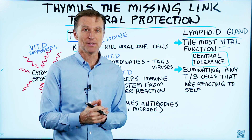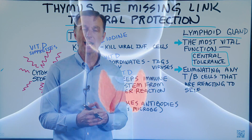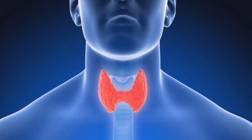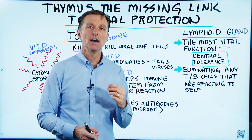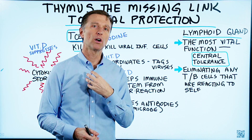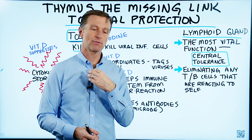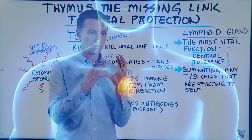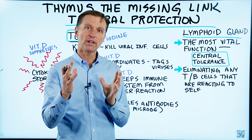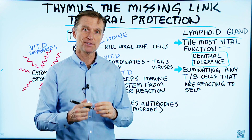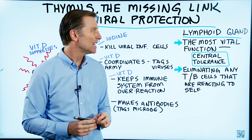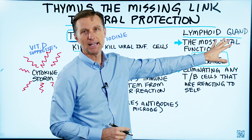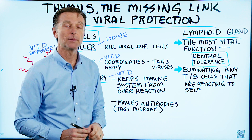What is the thymus? It's different than the thyroid. The thyroid is located in the front part of the neck and regulates your metabolism and many other things. The thymus is a little lower — it's right on top of the heart, right underneath your sternum. When you're born, it's very large, and then when you get older, it actually shrinks. The thymus is a lymph gland and it's a very important gland.